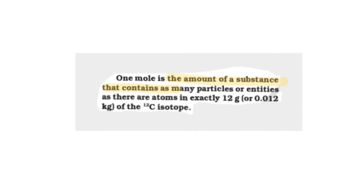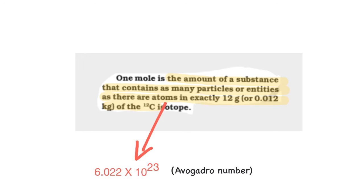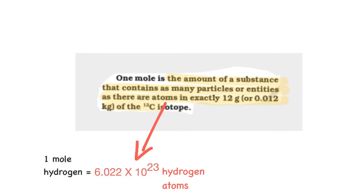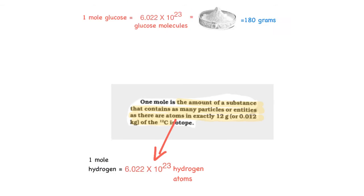...as there are atoms in exactly 12 grams of carbon, which equals the Avogadro number. So a mole of carbon has 6.022×10²³ carbon atoms, a mole of hydrogen has 6.022×10²³ hydrogen atoms, and so on.